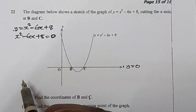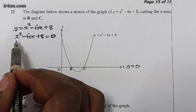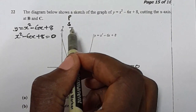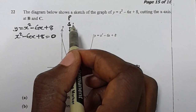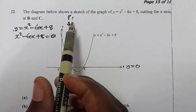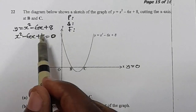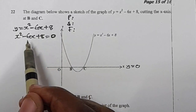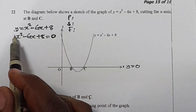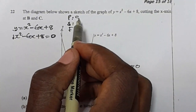This is now a pure quadratic equation and all we need is just to solve. Before we solve, you need to know the product, the sum, and the factors. The product is found by multiplying the coefficient of x squared by the constant. In this case, the coefficient of x squared is 1, so 1 times 8 is 8 positive.